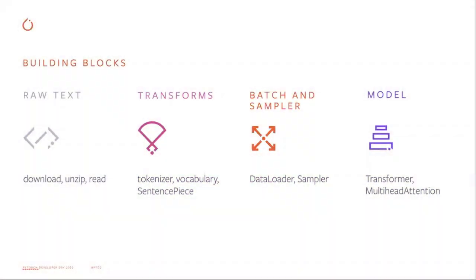So why do we want to have a text domain team in addition to PyTorch? First, we want to accelerate NLP research and provide some reusable, orthogonal, and correct building blocks for cutting-edge research. Based on our knowledge of the text domain and the research community, we want to work with both internal teams and the external open-source community to build a pipeline that can better support both Facebook products and external research.